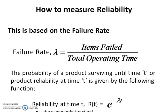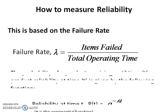The probability of the product surviving until time t or product reliability at time t is given by the following function. RT is equal to e to the power minus lambda t.